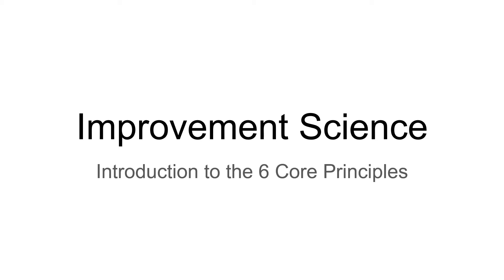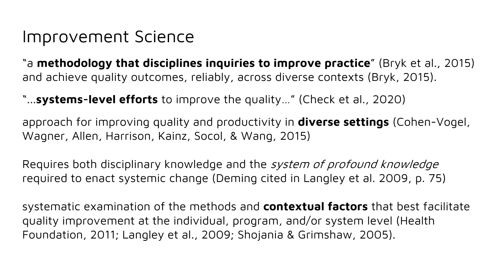Welcome to this introduction to improvement science: the six core principles. Improvement science is defined as a methodology that disciplines inquiries to improve practice and achieve quality outcomes reliably across diverse contexts. It is a systems-level effort that looks for achieving quality and productivity in diverse settings and attends to contextual factors to facilitate quality improvement.